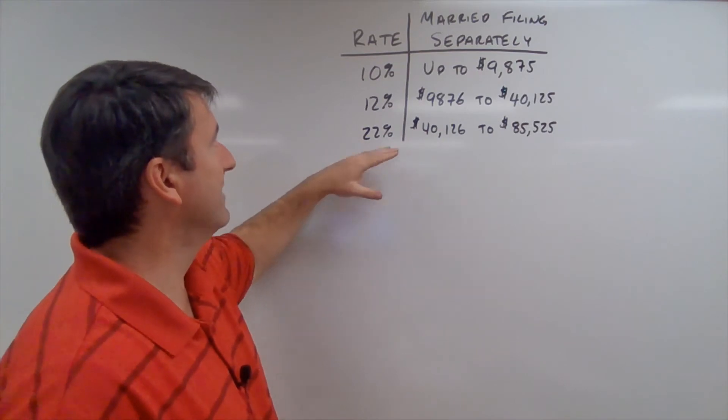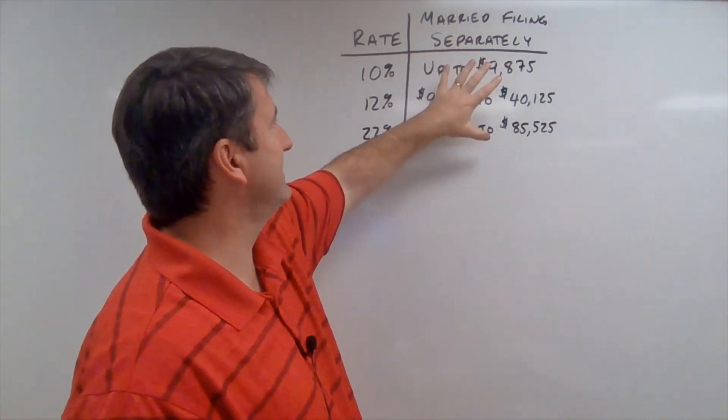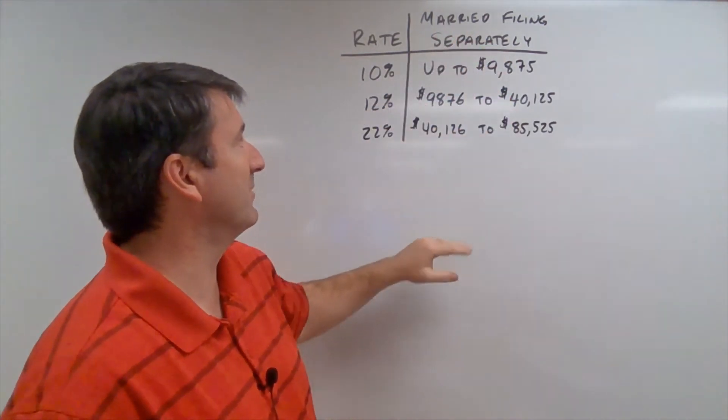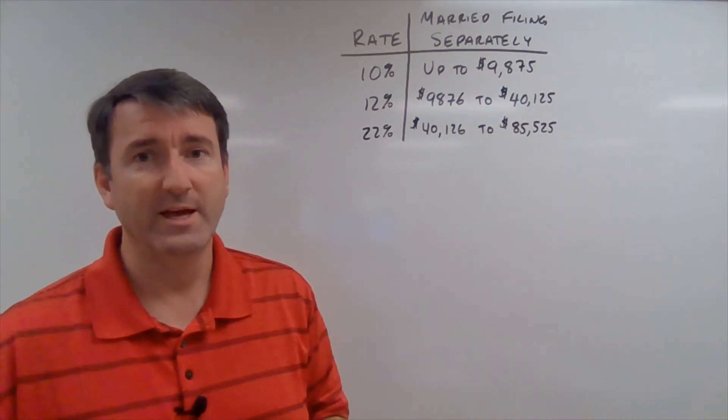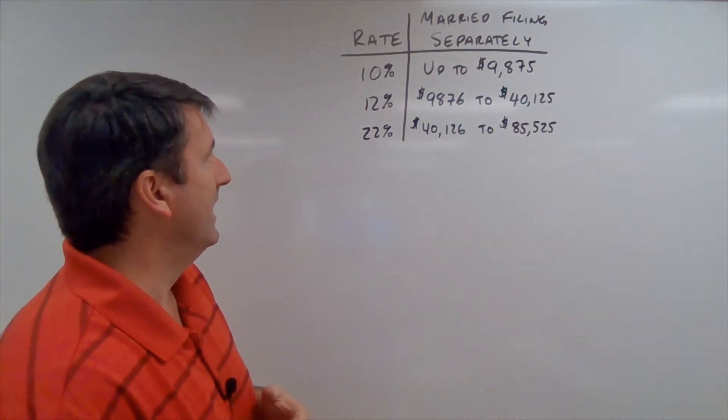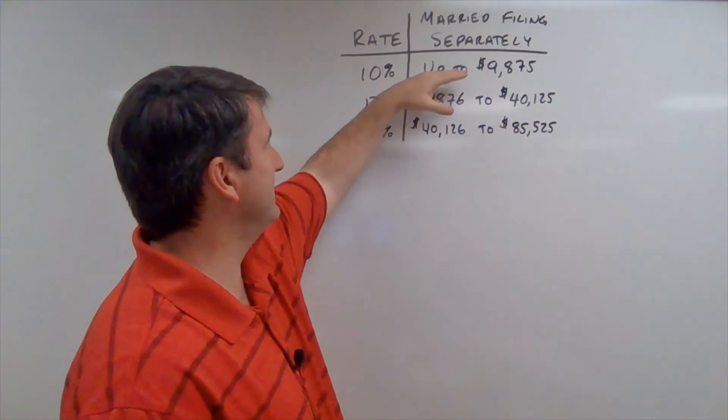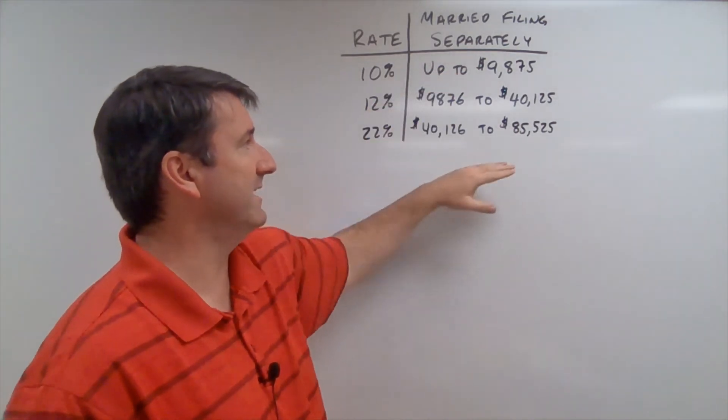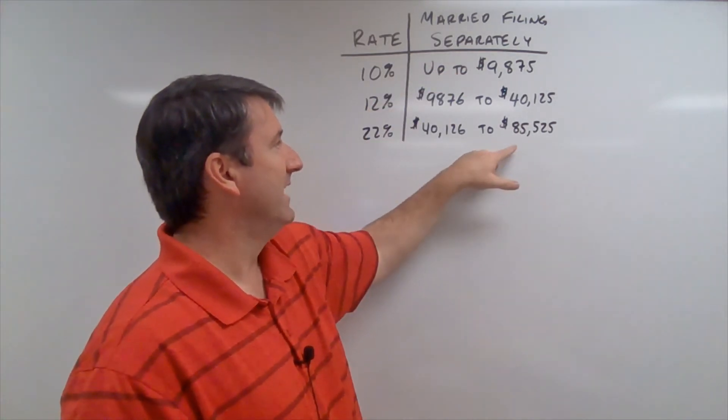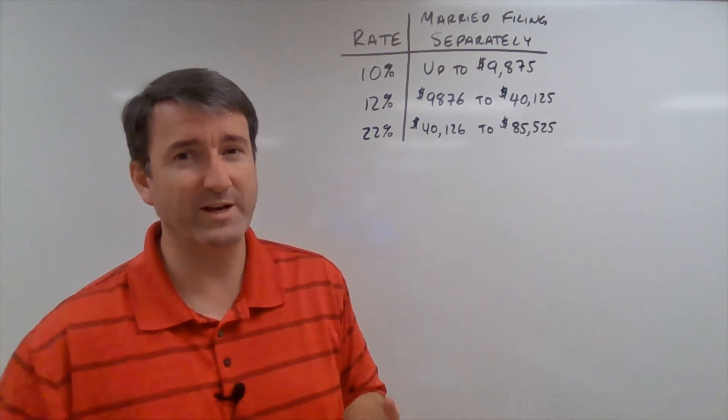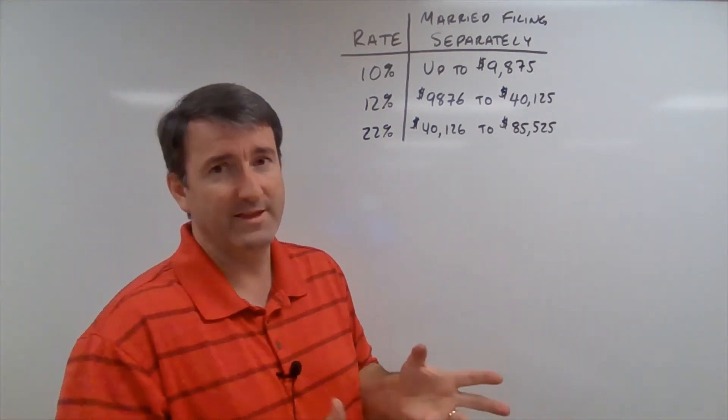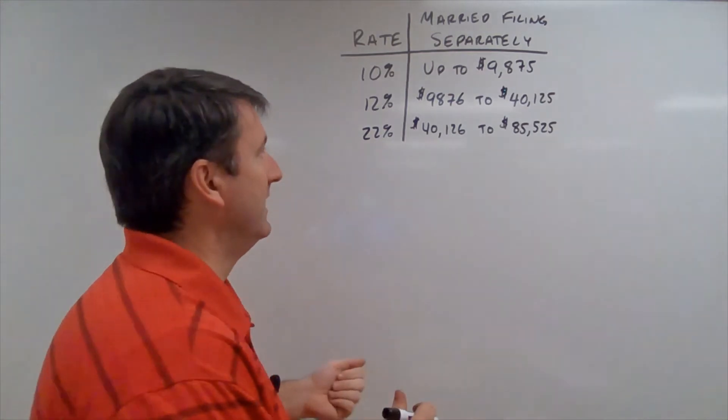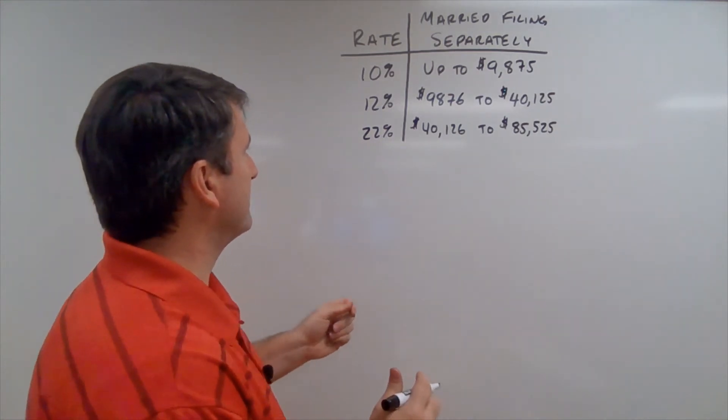You can see I've got the tax rates here, and she's married filing separately, so that's the column that I'm going to use. And you can see I've gone just the first three margins here because the last margin goes up to $85,525, which is more than Jessica's taxable income.